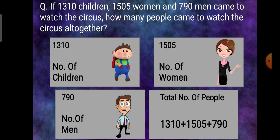So number of children 1310. Number of women 1505. Number of men 790. Total number of people 1310 plus 1505 plus 790. Now let's do the working.